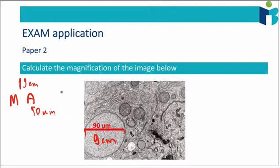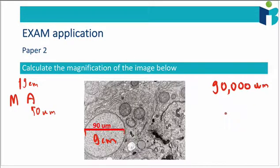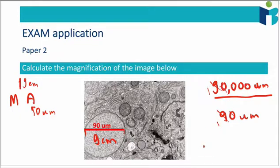Remember, we always have to have the exact same units when doing these calculations, so we have to convert centimeters into micrometers. We said before that 1 centimeter equals 10,000 micrometers, and therefore 9 centimeters is actually 90,000 micrometers. So when we do this calculation, we divide the image size by the actual size: 90,000 over 90. These cancel out, leaving us with a magnification of ×1,000. That is the magnification of this image. All you have to do is remember this formula, and always convert into the same units.